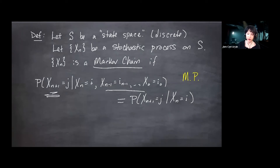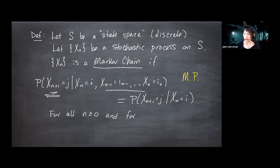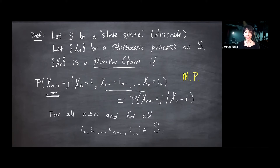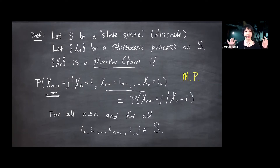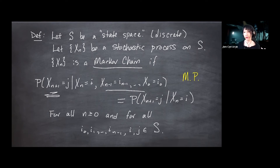We have defined a Markov chain: discrete time, discrete state space. We'll eventually consider all four combinations — discrete time/space, discrete time/continuous space, etc. — but we'll spend quite a while in this discrete-discrete regime. So your default when talking about Markov chains right now should be discrete-discrete.